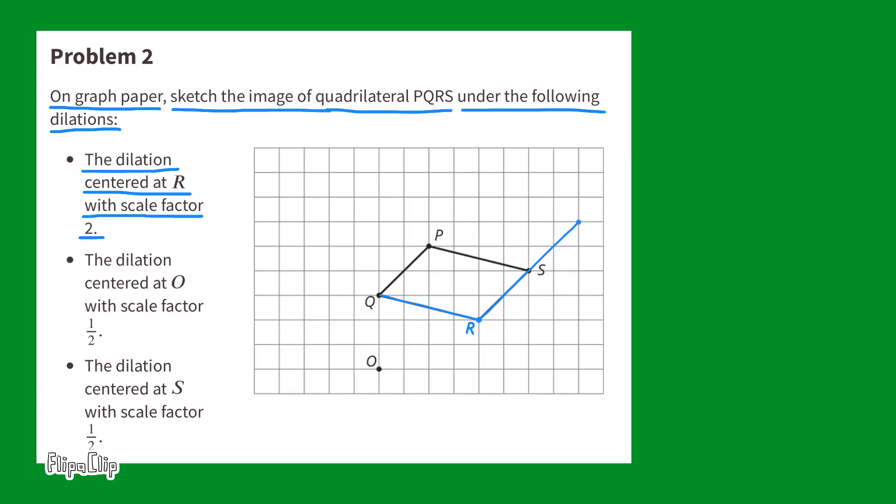Now, do the same with point R and point Q. Start at R, go to Q, and then past point Q, so that you've gone two times the distance from R to Q. And finally, we can do the same thing with point R and point P. You're going to go twice the distance of point R to point P, taking you past point P. Draw your new points and connect the points, and this shows the dilation of quadrilateral PQRS with a scale factor of 2.